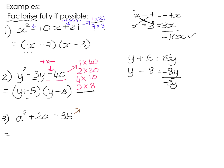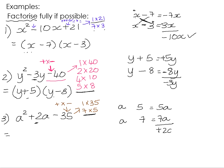Number 3: if we look at the factors of 35, there's 1 times 35 and 7 times 5. 7 and 5 have a difference of 2. The 35 is negative, so it must have been a positive multiplied by a negative. Starting with 5 and 7: a times 7 is 7a, a times 5 is 5a. We need those to add up to positive 2a, so the bigger must be positive and the smaller negative. So a must have been multiplied by positive 7 and a by negative 5, giving us a minus 5 and a plus 7.